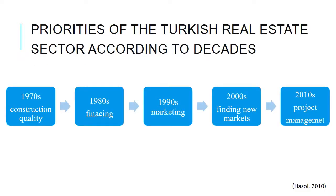Priorities of the Turkish real estate sector have changed by decade according to the research of Hustle. In the 70s construction quality was most important, but in the 80s financing was more important. In the 1990s people started marketing their projects to sell them better. In the 2000s, because there were so many projects, people had to find new ideas such as a new pool or entertainment center. But in the 2010s, the most important thing became how you manage the project. So in order to manage projects better, we started building process models looking at building creation and construction to make them more profitable.